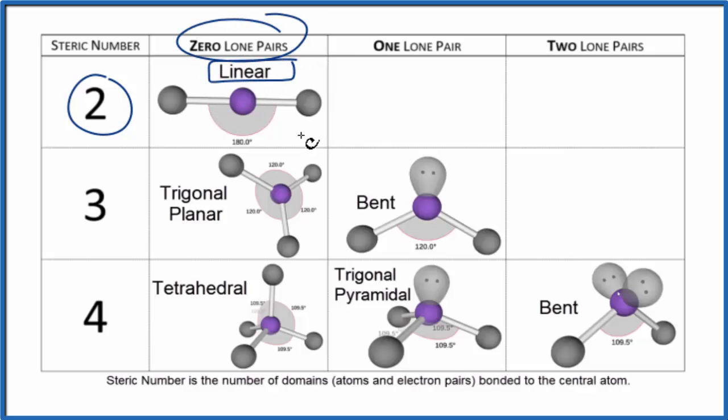If you were asked to use the AXE notation, A would be the central atom, the beryllium. X would be those two hydrogens attached. And E, the lone pairs. We don't have any, so often you'll just see E zero.